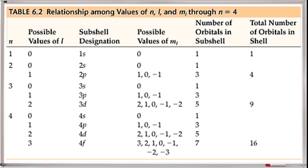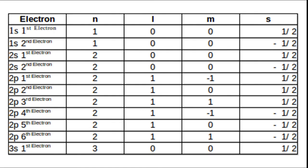For different values of n, we can determine different values of the other quantum numbers. For example, if n=1, the possible value of l is 0, the sub-cell designation is 1s, the magnetic quantum number m is 0, the number of atomic orbitals is 1, and the total number of orbitals in the shell is 1. Similarly, for n values of 1, 2, 3, and 4, the possible values of azimuthal and magnetic quantum numbers, and the number of shells, are given in the table.